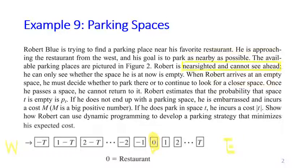Robert is nearsighted and cannot see ahead, such that he can only see whether the space he is at now is empty. He cannot see the next one, the next two in front, and so on — he can only see the space where he is at now. When Robert arrives at an empty space, he must decide whether to park there or to continue to look for a closer space. However, once he passes a space, he cannot return to it.